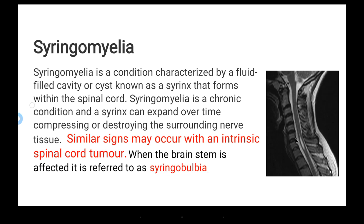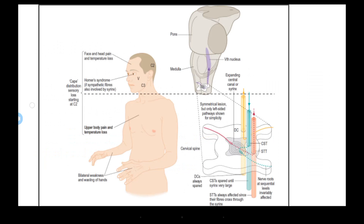The syrinx can originate from an intramedullary spinal cord tumor. Syringomyelia is a chronic condition where the syrinx expands over time, compressing and ultimately destroying the surrounding nerve tissue. When the brainstem is affected, it is referred to as syringobulbia.